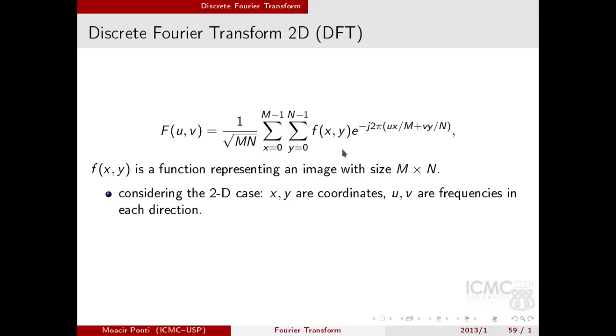In the equation, you can see f(x, y) as the function representing an image with size M by N. I also have the complex exponential here, and the complex exponential is almost the same as in the 1D case. But now, because I have two variables, I have x and y in the equation, and also u and v.